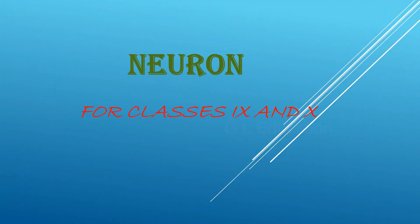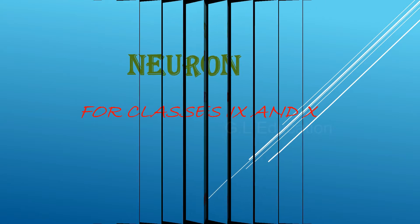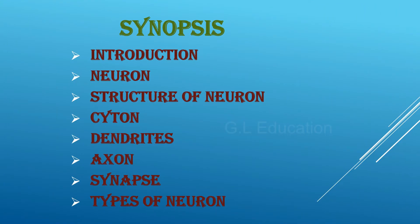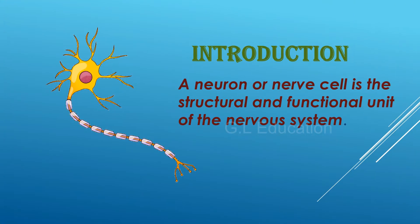Neuron for classes 9 and 10. Synopsis Introduction: Neuron, Structure of Neuron, Cytone, Dendrites, Axon, Synapse, Types of Neuron. A neuron or nerve cell is the structural and functional unit of the nervous system.